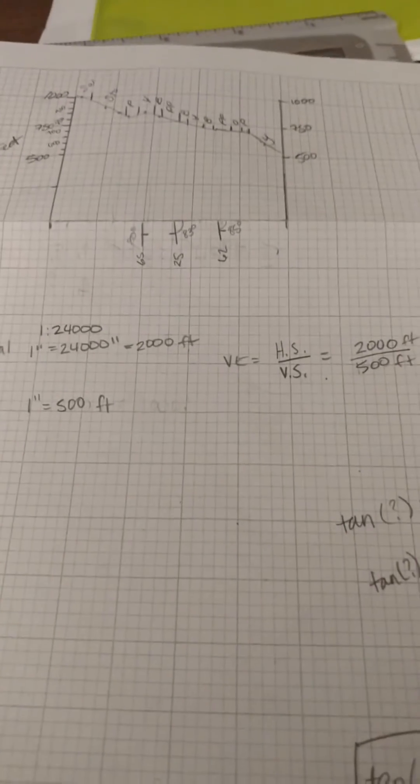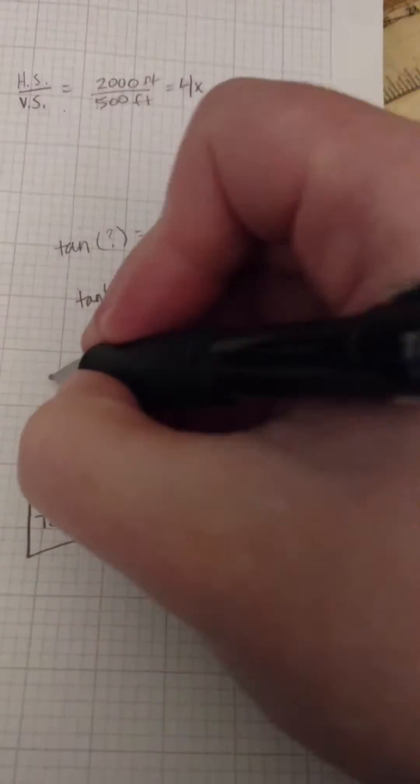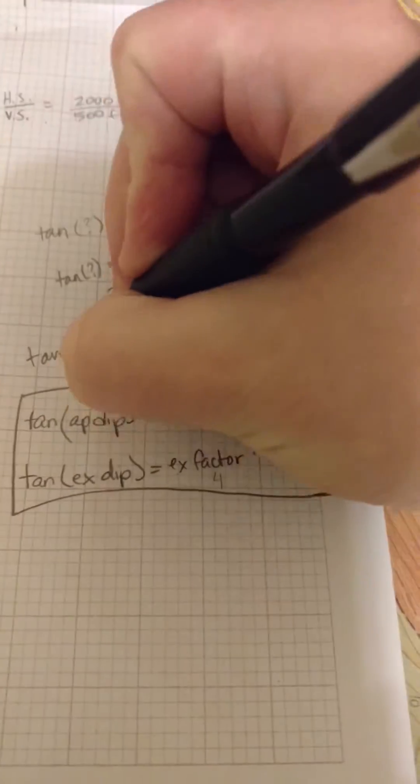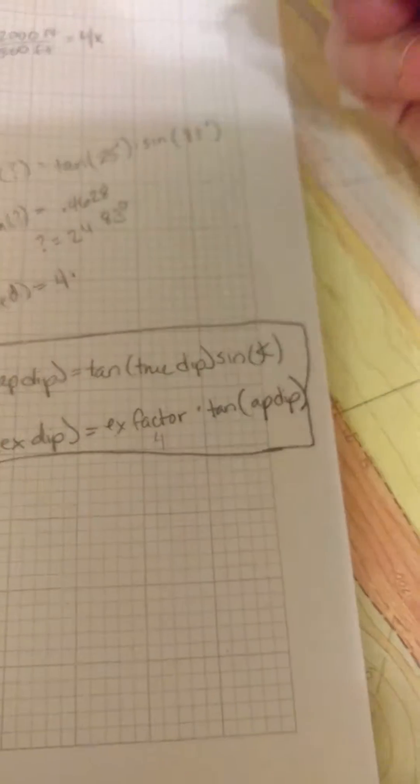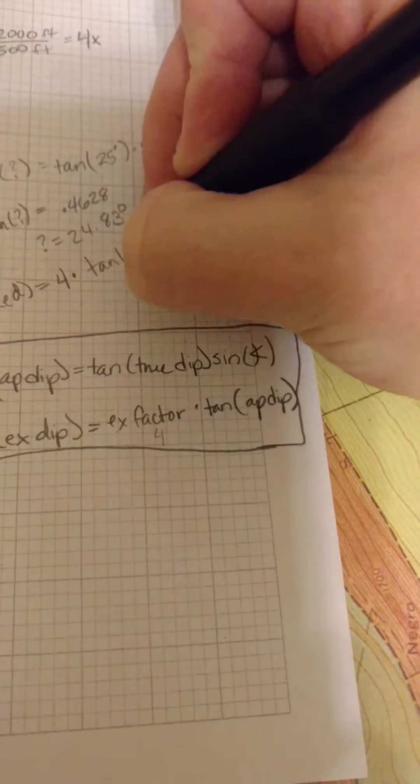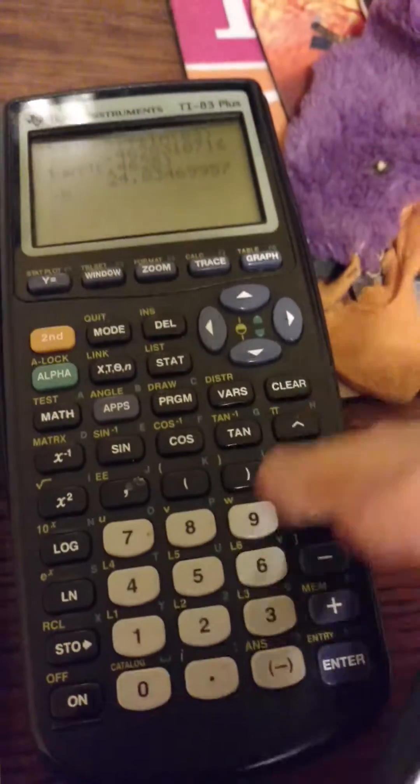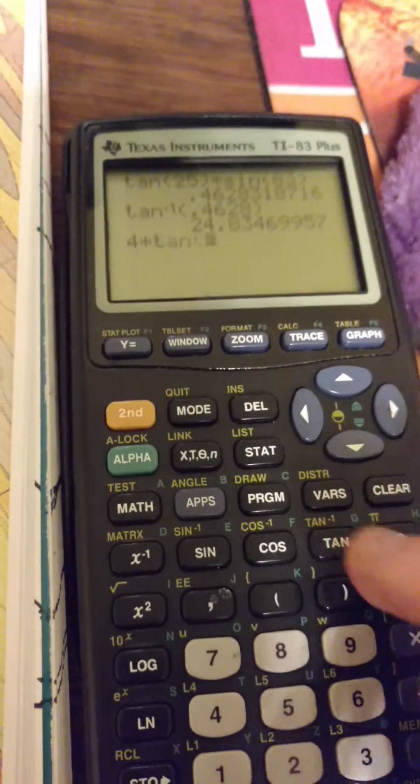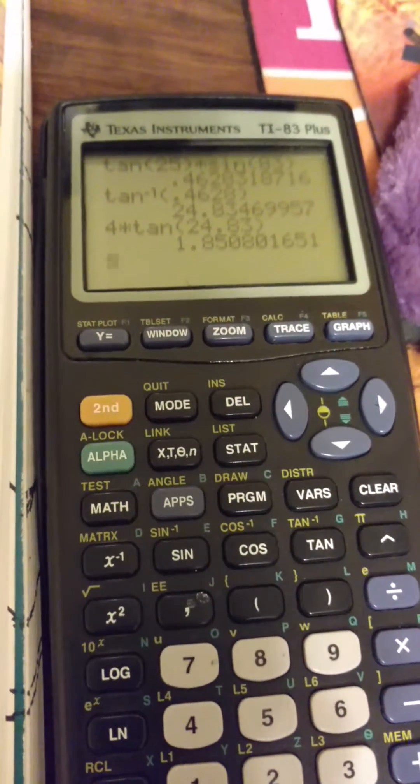But, like you know, we drew this with some exaggeration, so we're going to have to figure out what we're actually going to draw, what that exaggerated dip is going to be. Tangent of the exaggerated dip, which we don't know, but we want is going to be the exaggeration factor, which for us was 4, times the tangent of the apparent dip, which was 24.83 degrees. So, again, use your calculator. 4 times tangent of 24.83. Make sure your calculator is set to degrees. Is 1.85. And we'll do inverse tangent, so tan^-1 of 1.85 is going to give us the angle that we actually want to draw on our topographic profile.